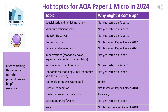Merit goods haven't been on the paper since 2017, and they're particularly topical with smoking and vaping — so I could see a question coming in that area. Beyond that, you're really looking at backwaters of the specification that haven't yet been tested, such as asymmetric information and immobility of resources as causes of market failure.